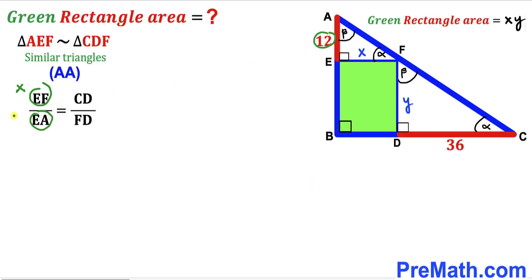Likewise, our side length CD is represented with 36 units, so I'm going to replace that with 36. Finally, FD the side length is Y, so I'm going to replace that with Y. Therefore I can write X divided by 12 equals 36 divided by Y.